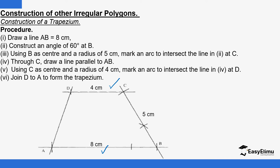To construct a trapezium, you must be given sufficient information to make the question doable — like certain lengths and certain angles, as you're going to see. We normally start with the base side, drawing line AB, which is definitely given in the question. We've already talked about how to construct a straight line.